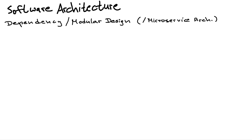Hello, this is a video in the field of software architecture about dependency, modular design, and microservices architecture — basically all the same concept but with different names and different fields. I'd like to emphasize that this is not an exhaustive video but rather a quick and dirty one to fulfill my very personal needs at the moment and maybe give you a rough overview of what's happening here.